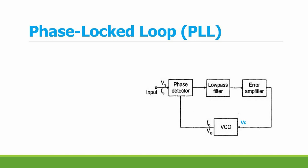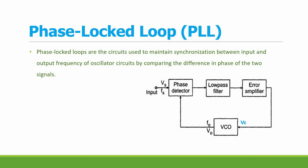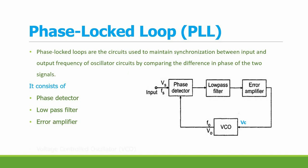This is the block diagram of PLL. PLL stands for Phase Locked Loop and has four basic elements. These are circuits used to maintain synchronization between the input and output frequency of oscillator circuits. It maintains synchronization by comparing the difference in phase angle of the two input signals. The phase locked loop consists of a phase detector, low-pass filter, error amplifier, and voltage controlled oscillator.